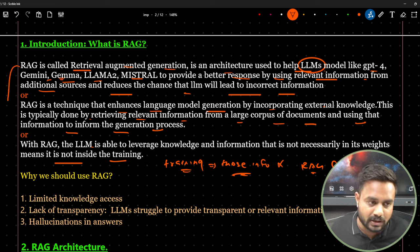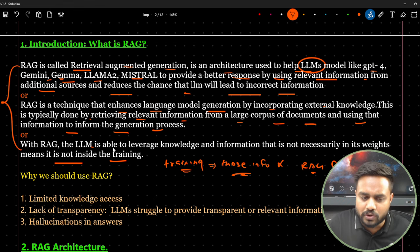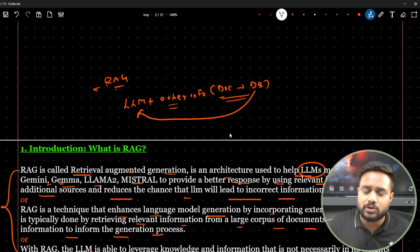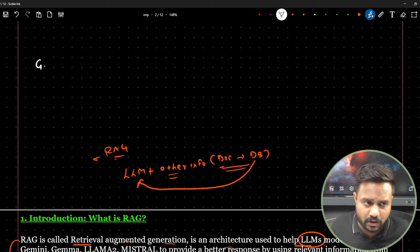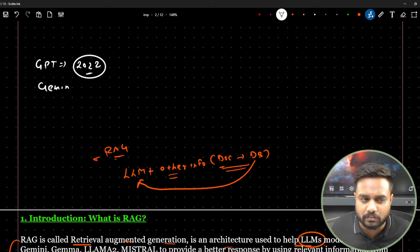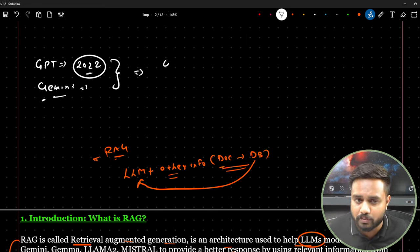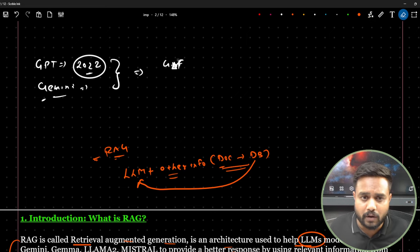Why should we use RAG? First: limited knowledge access. LLMs don't have all information. GPT, for example, has been trained only up to 2022 data. Gemini is a little better. These models are still not able to answer specific questions — like the current GDP of India, or domain-specific questions about e-commerce products.